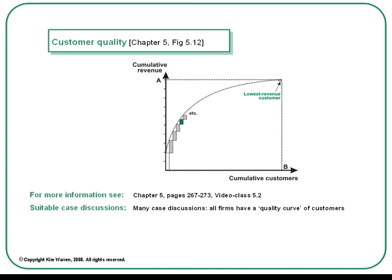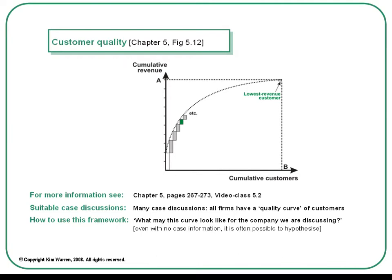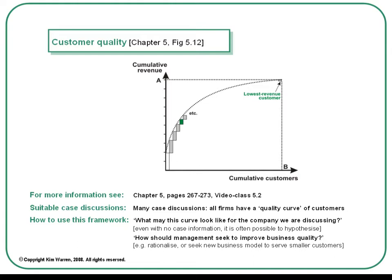This framework is suitable for many case discussions because pretty much all firms will have some quality curve of customers. You can ask the class what this curve might look like for the company you're discussing. Even when there's no case information on this, it's often possible to hypothesize about what that curve may look like. Is the business likely to have a small number of very large customers and a long tail of small ones, or is the customer profile likely to be more balanced? You can then go on and ask how management should seek to improve the quality of its business — should it be trying to rationalize its smaller customers or try to develop a new business model to serve smaller customers more effectively and profitably?